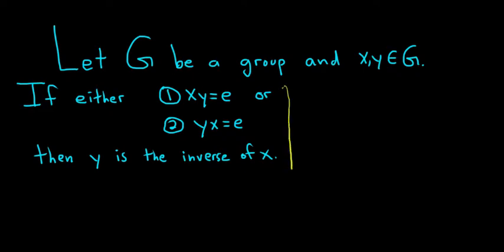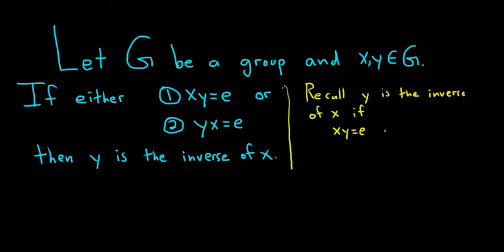First let's recall what it means for y to be the inverse of x. So recall: y is the inverse of x if you take x times y and you get E, and if you take y times x and you also get E.